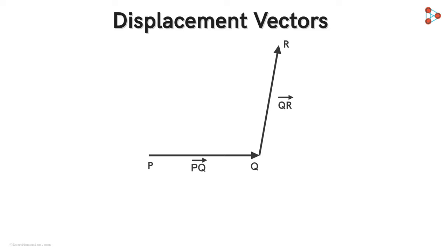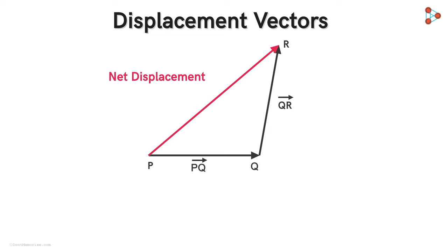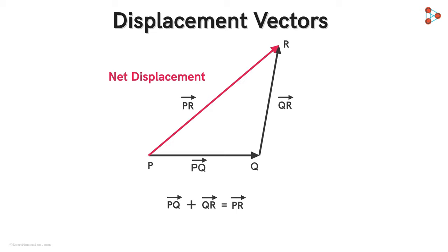Now can you tell me what will our net displacement be? It will be from P to R. The net effect of our displacement, first from P to Q and then from Q to R, is equal to the displacement from P to R. And this net displacement will be given by the vector PR. So we can say that the vector sum of these two displacement vectors PQ and QR is equal to the displacement vector PR.